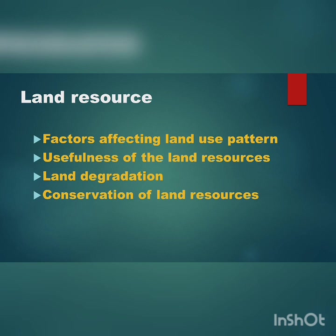Earlier, earth was in a natural form, full of forest, desert, rivers, lakes and grasslands only. As it was humanized, man started using land to satisfy his various needs. First, he started agriculture. Then he made settled homes, domesticated animals and got civilized.